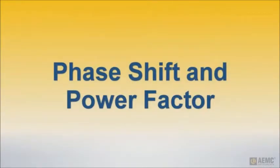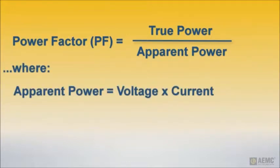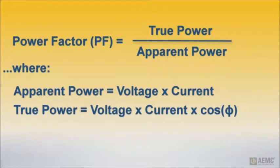Phase shift has an adverse impact on power factor. To understand why, let's consider the formula for calculating power factor, which is derived by dividing true power by apparent power. Apparent power is simply voltage times current. To calculate true power, we factor in the cosine of the phase shift.